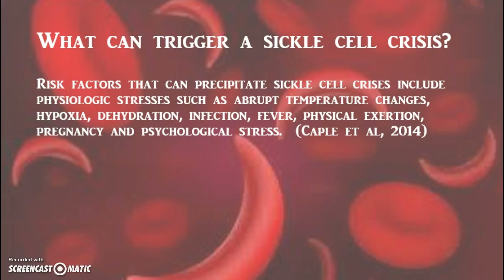Risk factors that can precipitate sickle cell crisis include physiological stresses such as abrupt temperature changes, hypoxia, dehydration, infection, fever, physical exertion, pregnancy, and psychological stress.